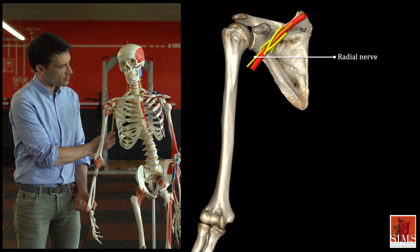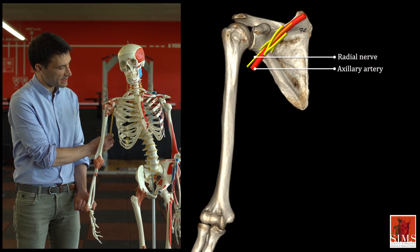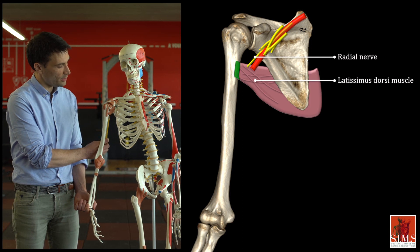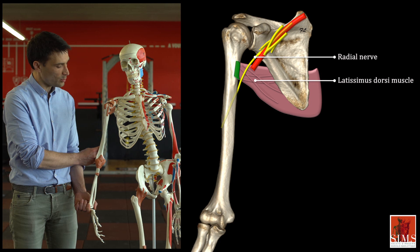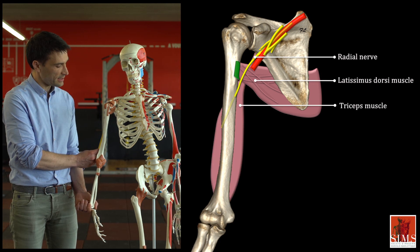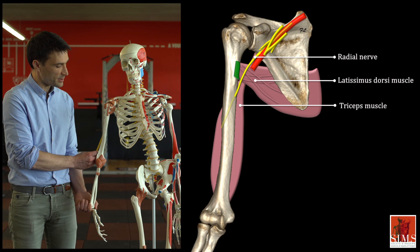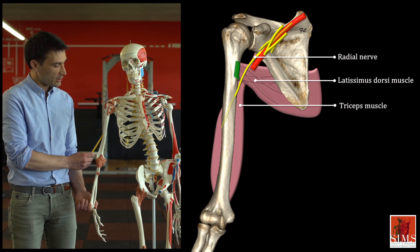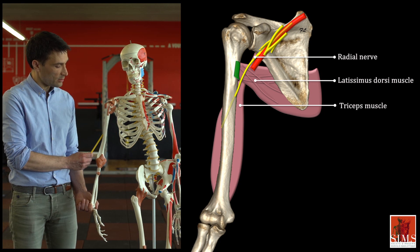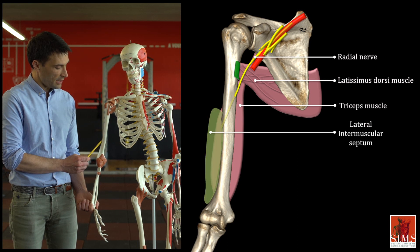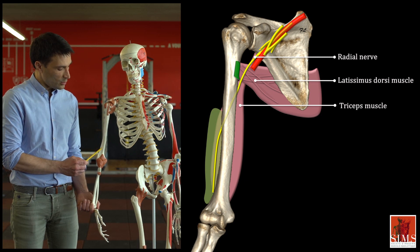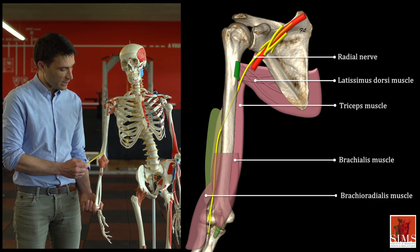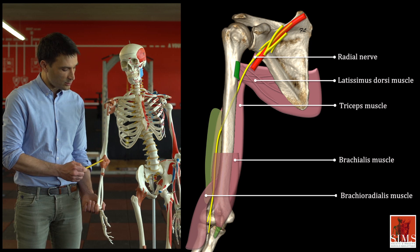The radial nerve crosses the axilla posterior to the axillary artery, then passes under the teres major and the latissimus dorsi to the posterior surface of the upper arm. It passes between the lateral and medial heads of the triceps brachii, coming into direct contact with the bone cortex at the middle third of the humeral shaft. It then passes along the anterolateral surface of the upper arm and between the brachialis and brachioradialis muscles to reach the anterolateral surface of the elbow.